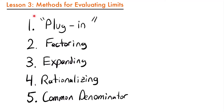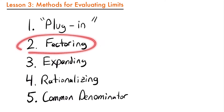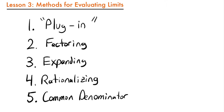Method number one is our plug-in method. We'll briefly focus on that because the main focus of this lesson are the next four methods for when plugging in doesn't initially work. That brings us to our second method of factoring, which we can use to make a limit simpler. Or we can use expanding — our third method — that may also make a limit easier to evaluate. Then we have rationalizing for limits with square root functions, and a common denominator method that allows us to simplify fractions.